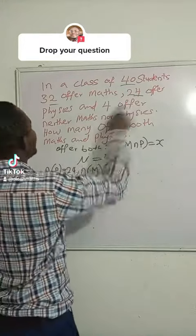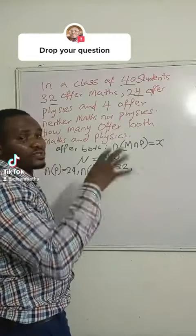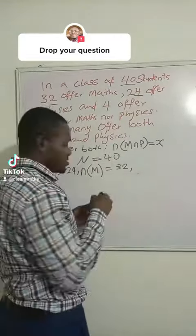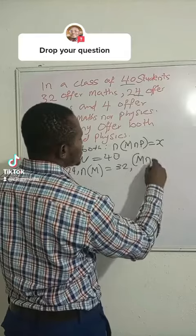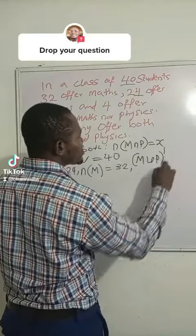We have 4 offer neither math nor physics, so it means that is what we call complement, what you can find in the universal set that comes in the set. So math union physics complement is equal to 4.